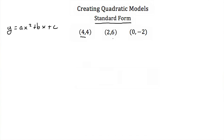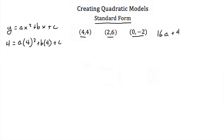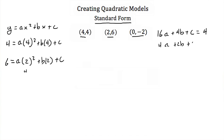So what we're going to do is plug each one of these points in individually for x and y. Our first point has y equal to 4 and x equal to 4. That's equal to a times 4 squared plus b times 4 plus c. 4 squared is 16, so we have 16a plus 4b plus c is equal to 4. Next we'll plug in the point where x is 2 and y is 6. That gives us 4a plus 2b plus c is equal to 6.